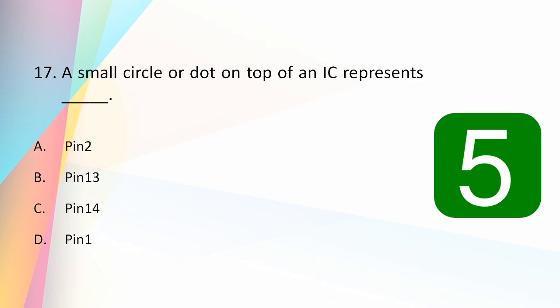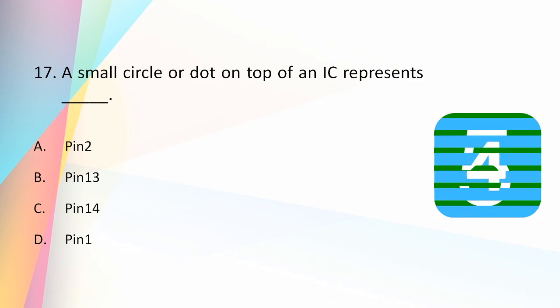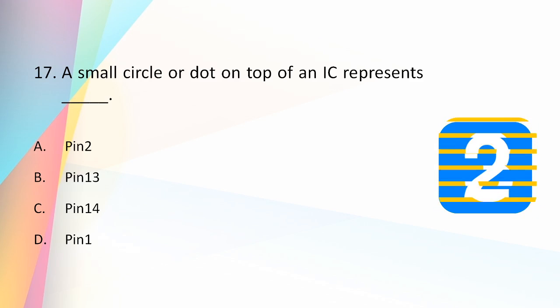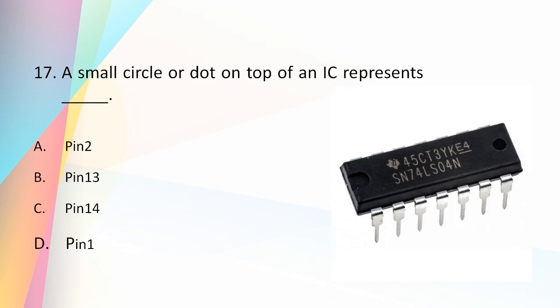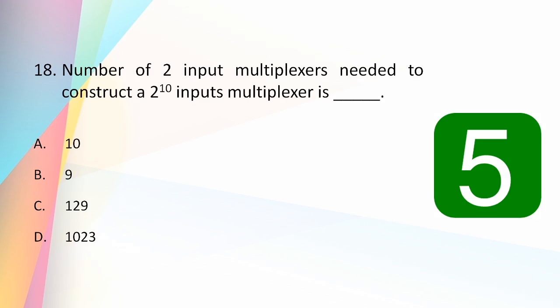A small circle or dot on top of an IC represents which pin: pin 2, pin 13, pin 14, or pin 1? The answer is pin 1, because this dot marks the starting pin of the IC, and the other pins are counted from this pin moving in the counterclockwise direction.